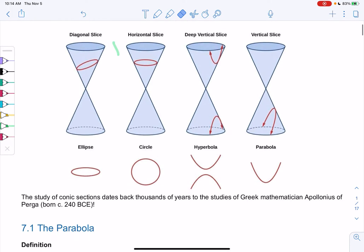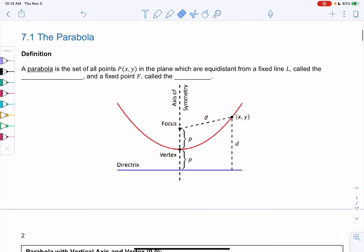Let's jump into 7.1, the parabola. A parabola is the set of all points in a plane which are equidistant, that means the same distance, from a fixed line called the directrix. That's the blue line below the curve.